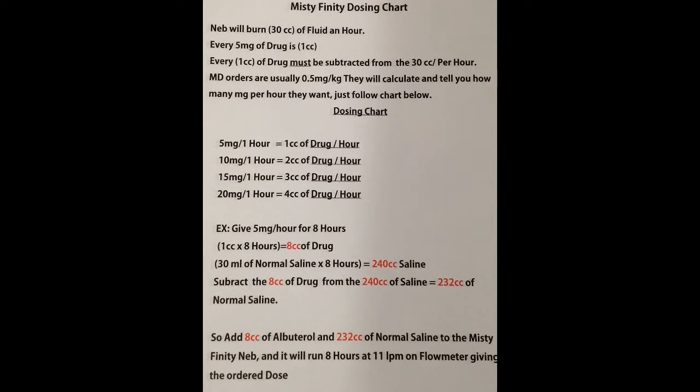Say the physician wants to give a five milligram an hour treatment for eight hours. You're going to simply multiply one cc times eight — that's eight cc's of the drug — plus 30 mls times eight, which is 240 cc's of normal saline. Then you simply subtract the eight cc's from the 240, which leaves you with 232 cc's of normal saline.